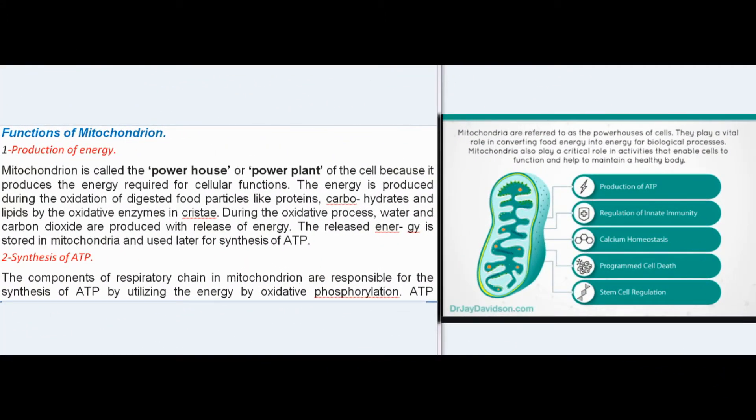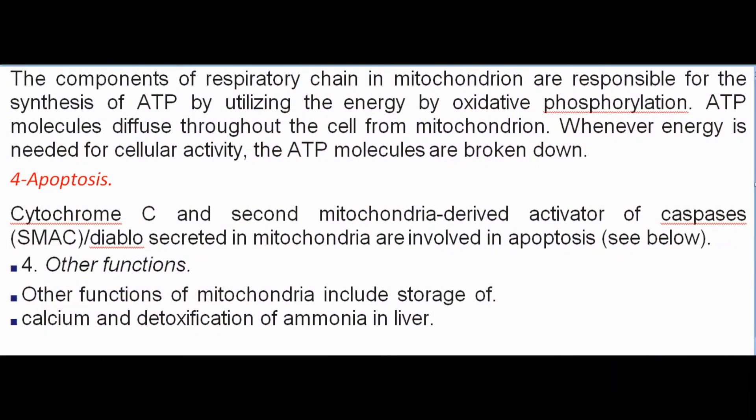Mitochondrion is called the powerhouse or power plant of the cell because it produces the energy required for cellular functions. Energy is produced during oxidation of digested food particles like proteins, carbohydrates, and lipids by the oxidative enzymes in the cristae. Water and carbon dioxide are produced during oxidation, with release of energy stored in mitochondria for synthesis of ATP. The respiratory chain components are responsible for synthesis of ATP by oxidative phosphorylation. ATP molecules diffuse throughout the cell and are broken down whenever energy is needed for cellular activity.